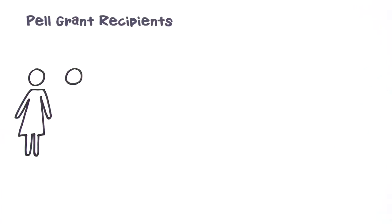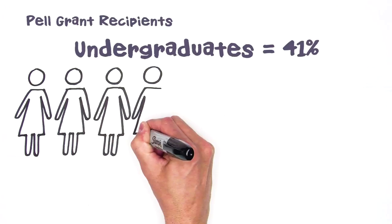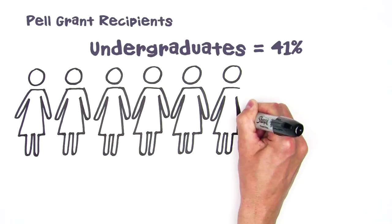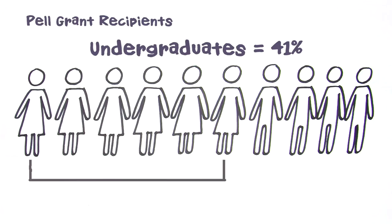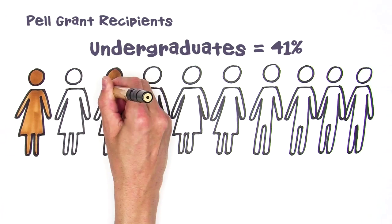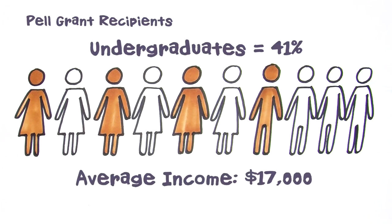What kind of students receive a Pell Grant? About 41% of all undergraduates. About 6 out of 10 recipients are financially independent, 6 out of 10 are women, and more than 4 out of 10 are African American or Latino. The average annual income of a Pell Grant recipient is about $17,000.